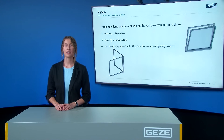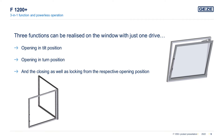The F1200 Plus not only has an attractive design, it also offers a 3-in-1 function, meaning three functions can be realized with only one drive. This includes opening in the tilt position, opening into the turn position, as well as closing and locking the window. The option to effortlessly open the window into the turning position enables more natural ventilation as well as easy cleaning of the window surface.